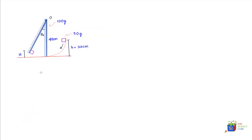In this problem we have a rod with an axis of rotation, and a block of 50 grams slides down a plane and hits the rod. The rod and block stick together and travel up a distance H. The mass and length of the rod are given, the mass of the block is given, and the height from which it starts to slide is also given. We need to find angle theta-naught when the block and rod reach the maximum height.